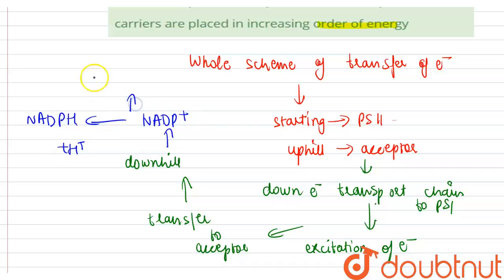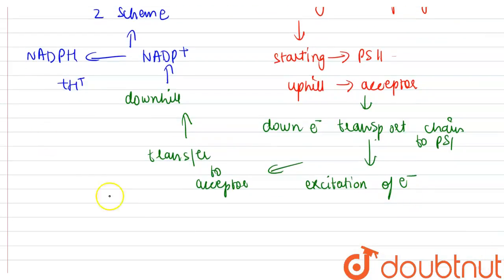It is called as the Z scheme. This type of scheme is called as the Z scheme due to its characteristic shape.